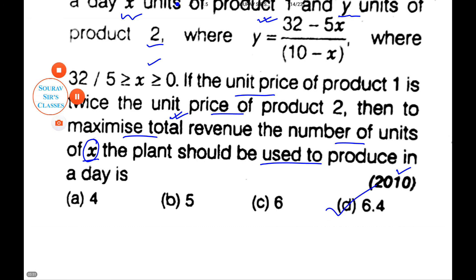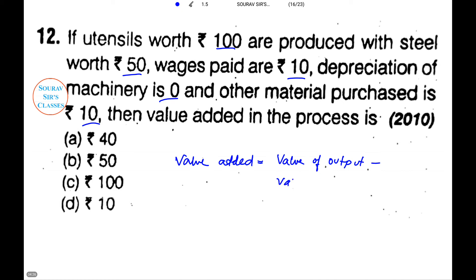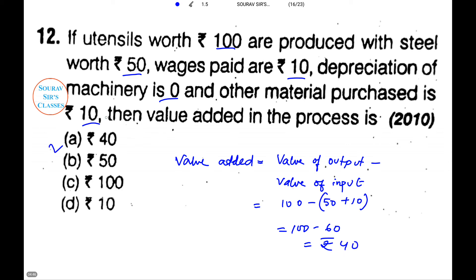The next question says: if utensils worth 100 rupees are produced with steel worth 50 rupees, wages, depreciation, and other material purchases totaling 10 rupees, what is the value added in the process? Value added equals value of output minus value of input: 100 − 50 − 10 = 100 − 60 = rupees 40, which is option A.